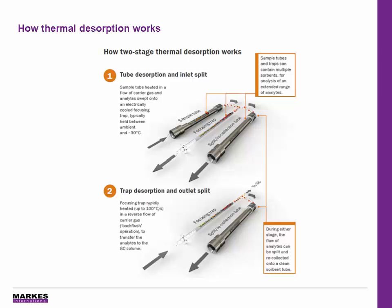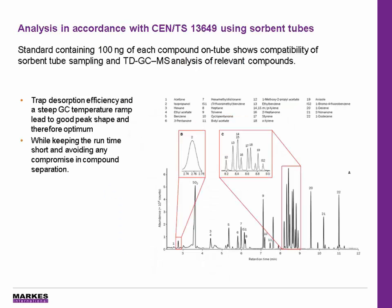At this point, the sample can be split, and we can take that split portion onto a clean sorbent tube and recollect it — this is what allows us to reanalyze a single sample. The sample is now on the focusing trap, the flow of gas is reversed through the trap, and the sample is taken to the GC column. At this point, the focusing trap heats up rapidly at about 100 degrees per second, and the sample is taken to the GC detector. Again, we can also split the sample here, so if we have very high concentrations, we can do a double split and recollect all of the analytes from that sample.